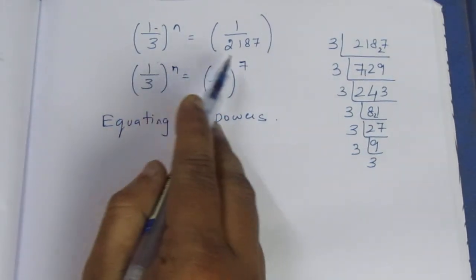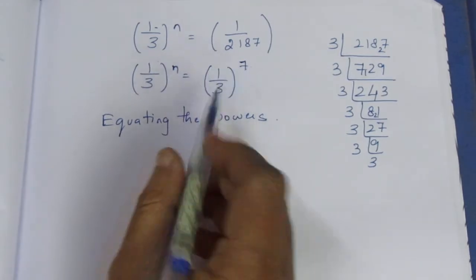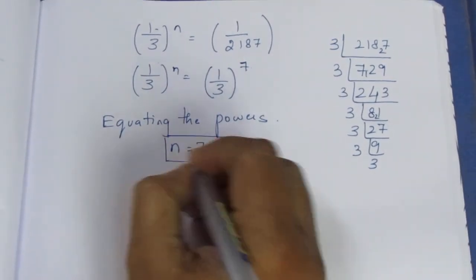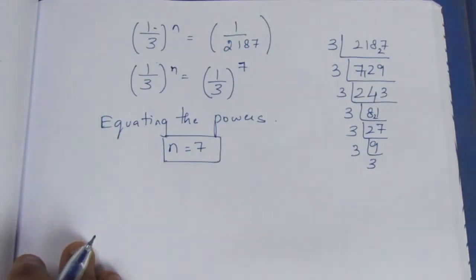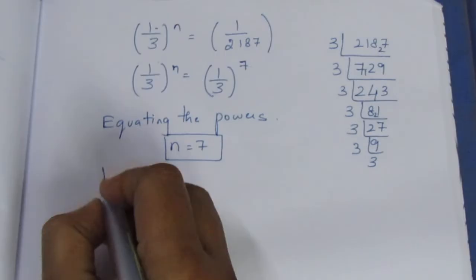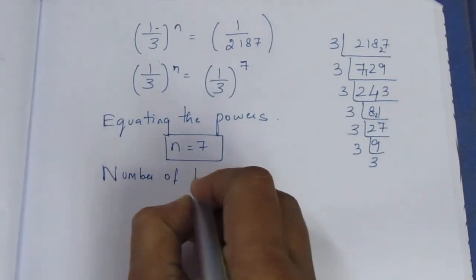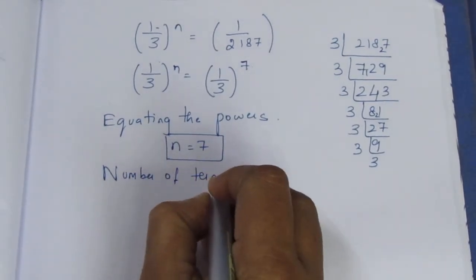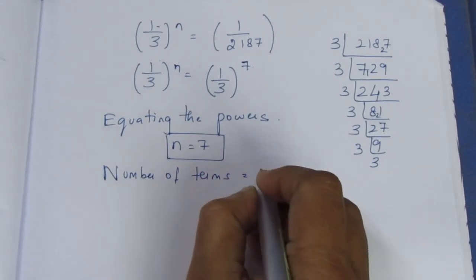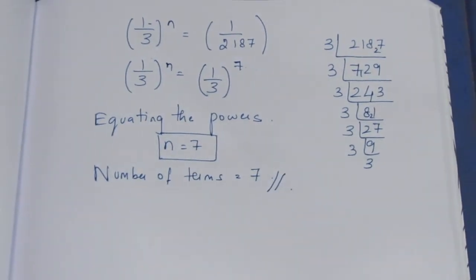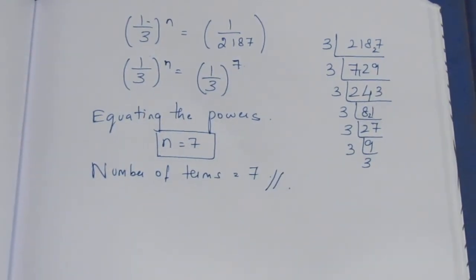Equating the powers, n equals 7 directly. So the number of terms equals 7. This is the final answer to the second sum. Thank you.